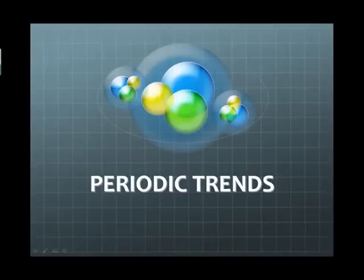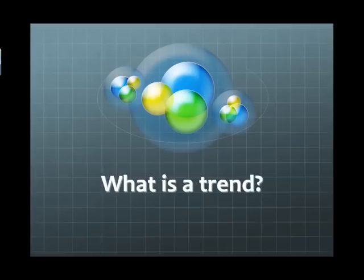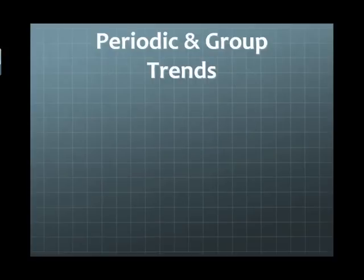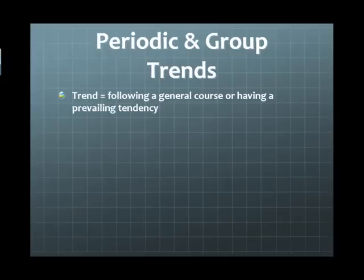This podcast is about periodic trends. What is a trend? Within particular groups in the periodic table, there are general properties that tend to occur within a group. A trend is following a general course or having a prevailing tendency. Each group in the periodic table — that is a vertical column — has similar outer valence electrons.